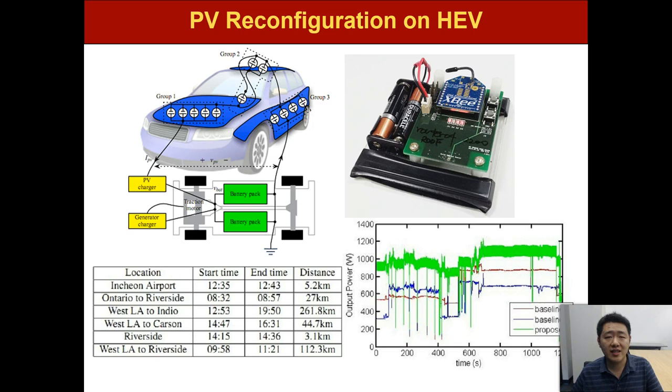We have tested our reconfiguration algorithm with two baseline algorithms. Generally, the proposed approach can achieve about two times gain in output power compared with the baseline approach. And this shows the promise of using PV for electric vehicles.